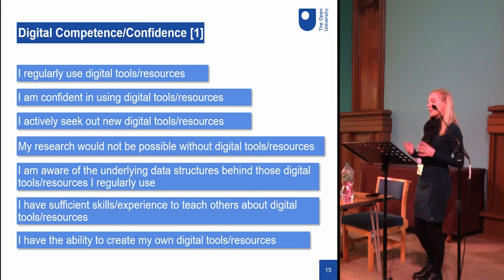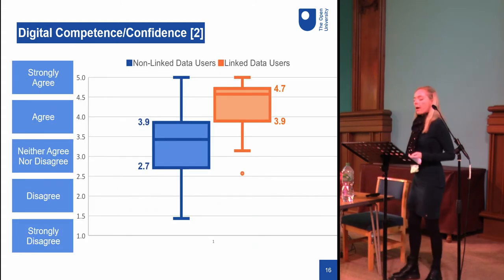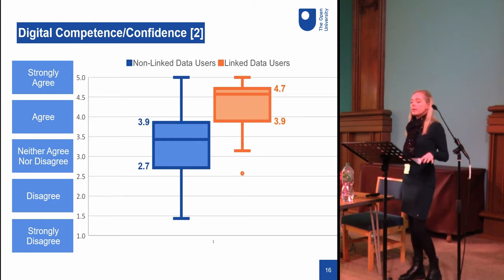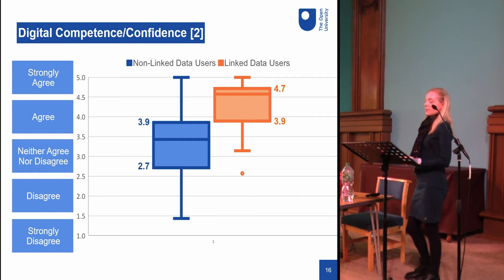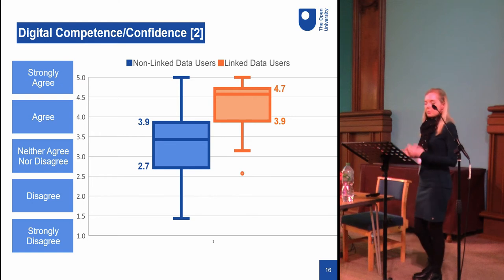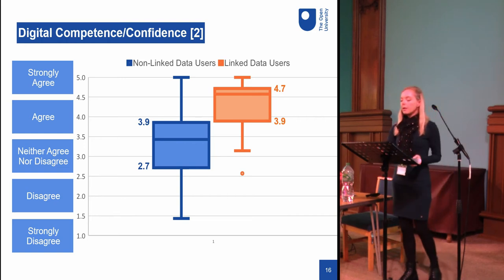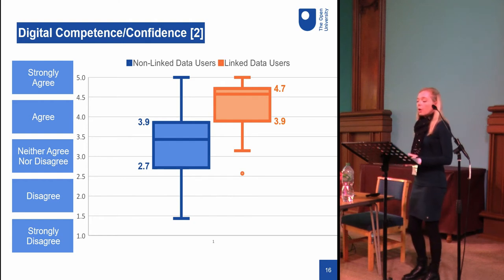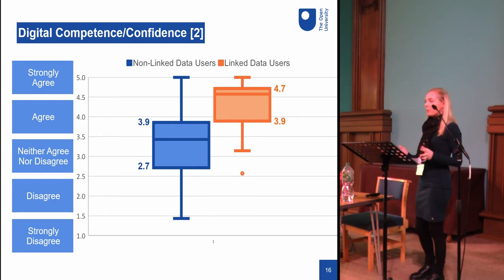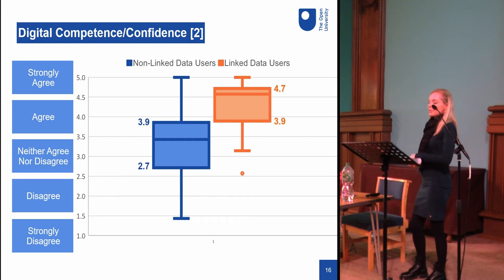I scored each level of agreement on a scale of one to five and took the mean score across all seven statements per participant. Comparing participants who'd used linked data with those who had not, linked data users generally had higher mean scores for self-assessed digital competence — most between 3.9 and 4.7 — whereas non-linked-data users scored between 2.7 and 3.9. This implies linked data resources tend to require higher technical skill, or that their existence hasn't been communicated beyond the digital research community. However, it might be more accurate to say linked data users demonstrated higher digital confidence rather than necessarily higher competence.